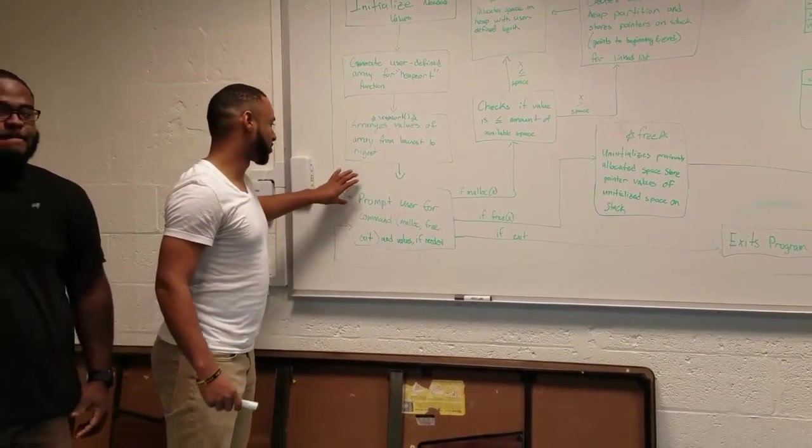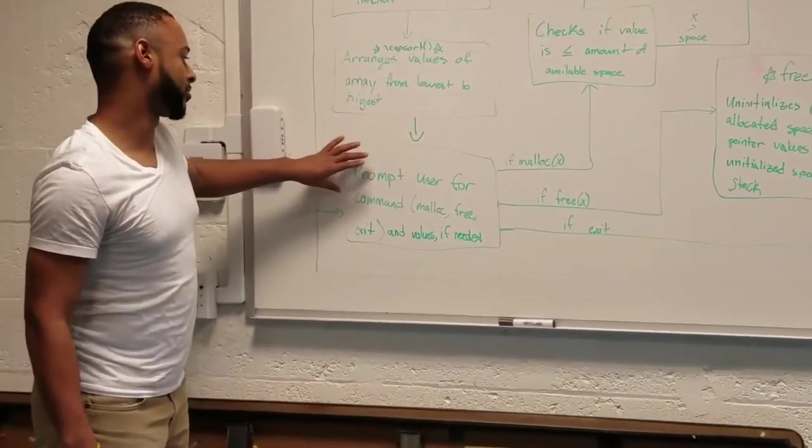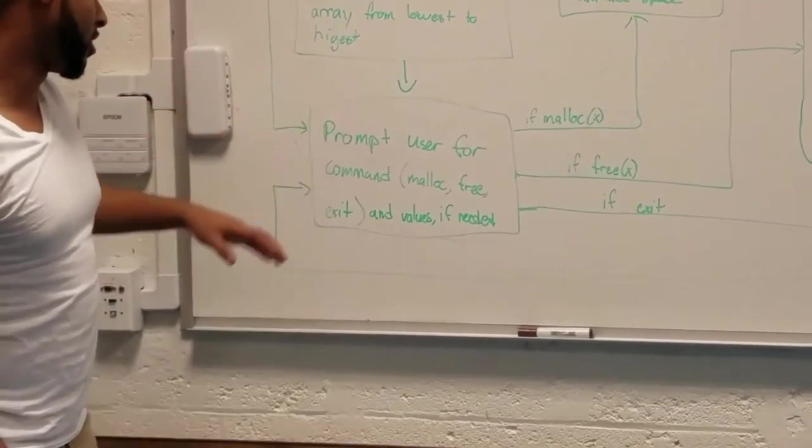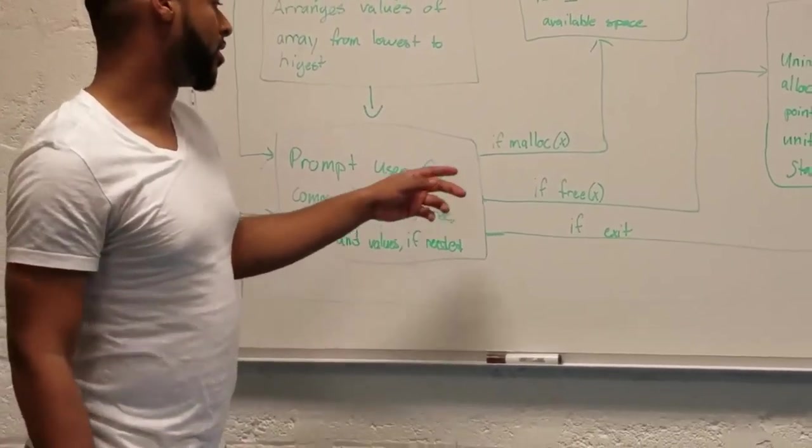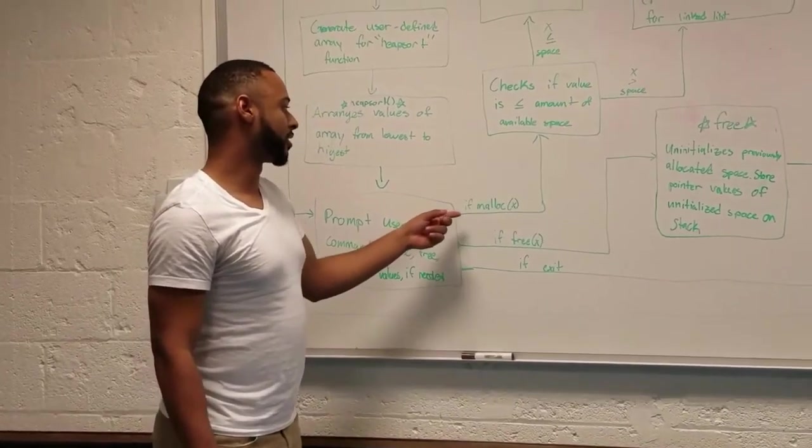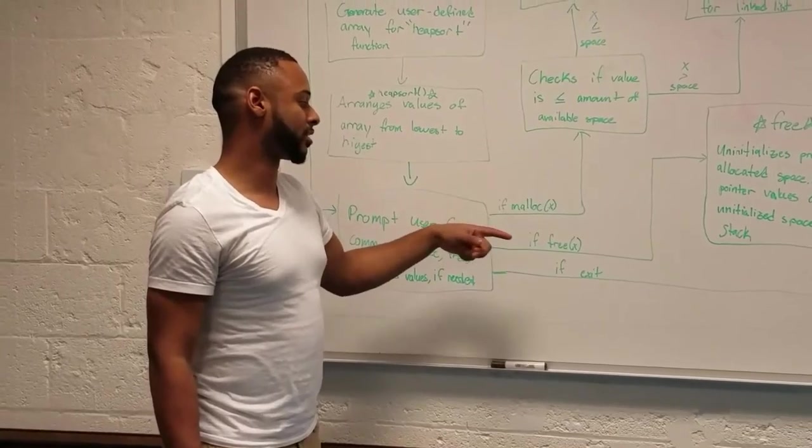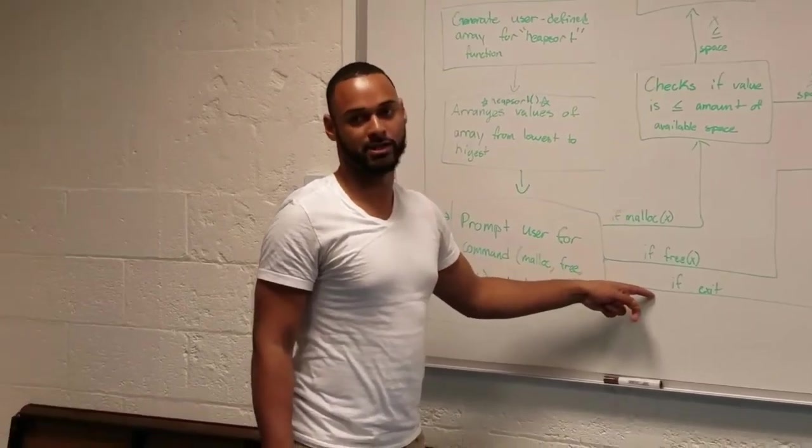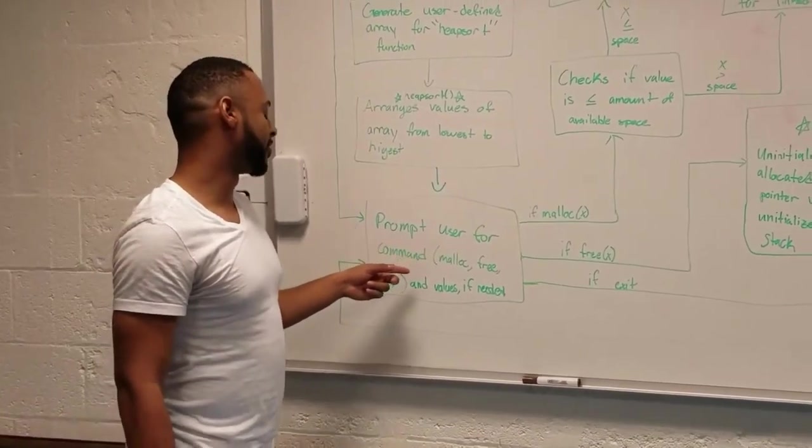So once we get to this component, this is our user prompt function. Basically from this point, we're going to have three options that the user can decide to do. They can either call malloc, they can call free, or they can exit the program. If the user inputs a zero, that will direct them to the malloc branch.